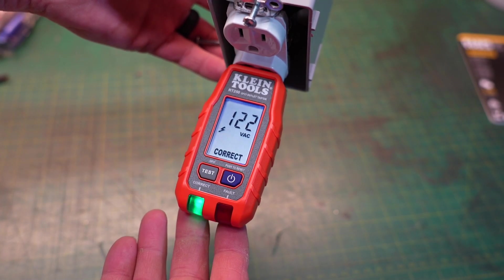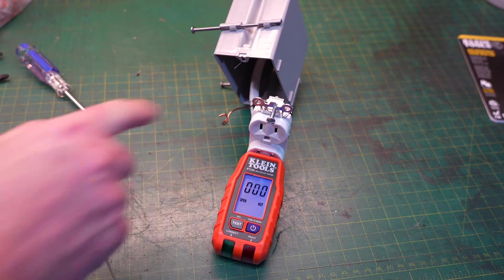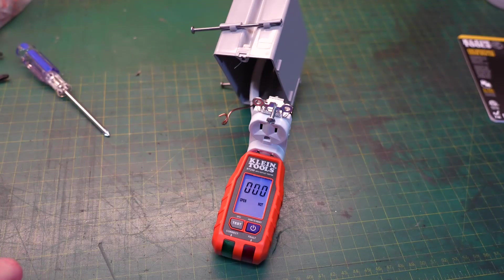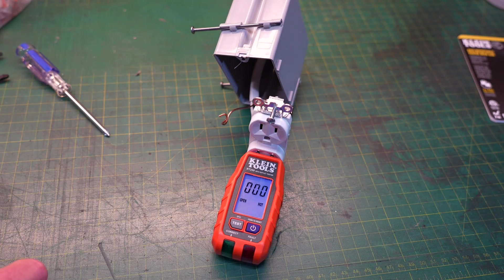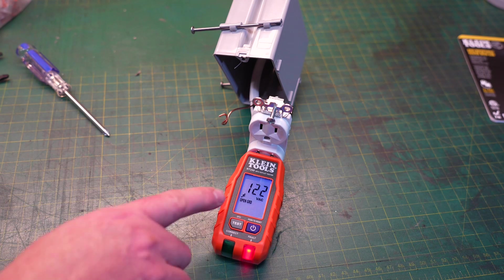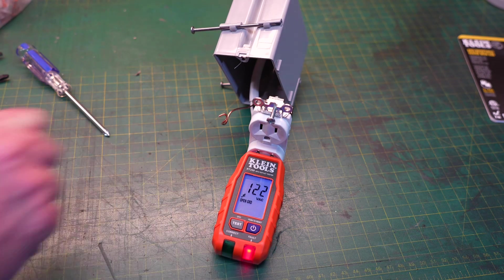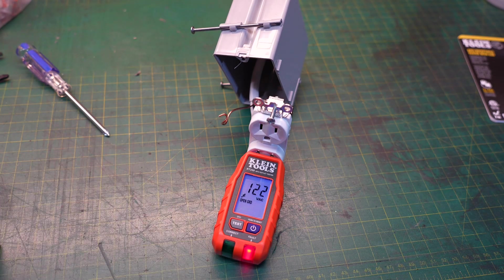Now let's wire this receptacle incorrectly and we'll see how it handles that. For the first test I have disconnected the ground. We're going to restore power to this receptacle and see what the meter tells us. It tells us we have 120 volts but it also says we have an open ground and we have a red light. So the tool detected that perfectly.